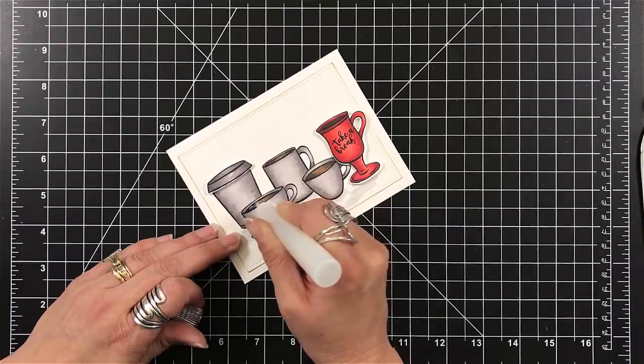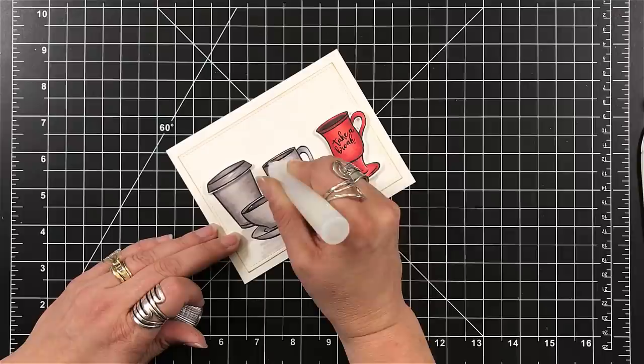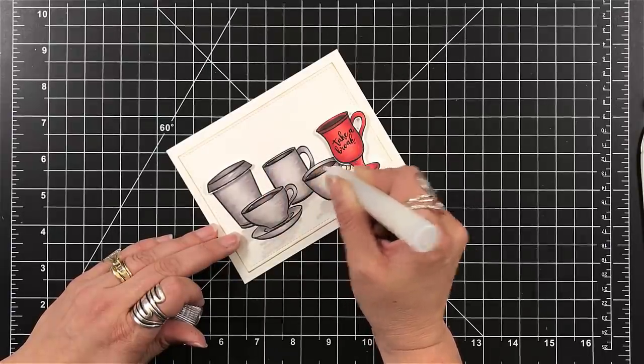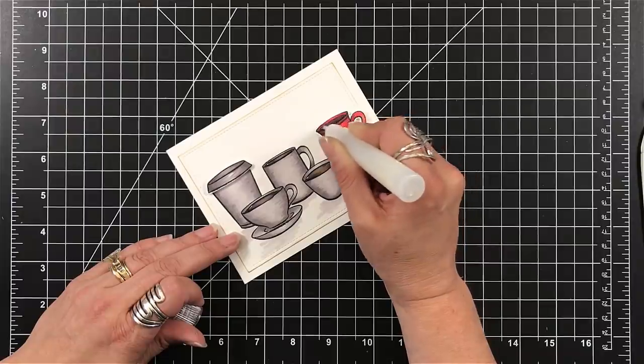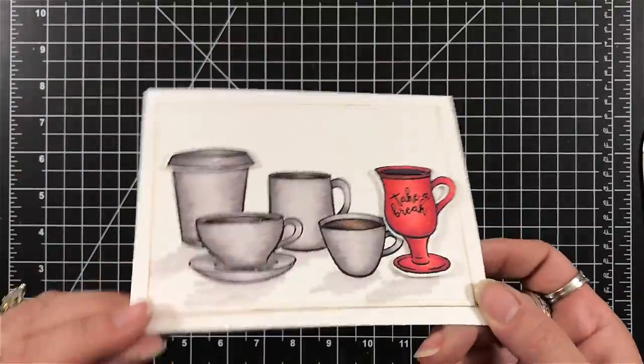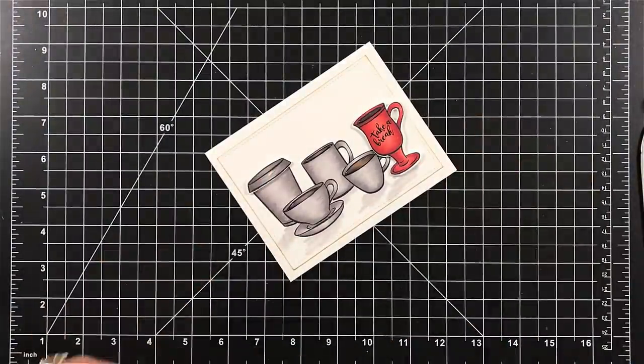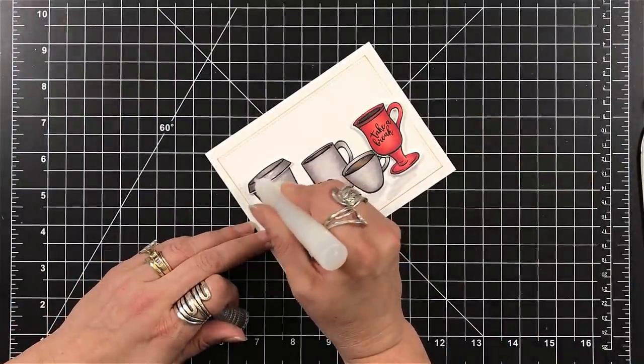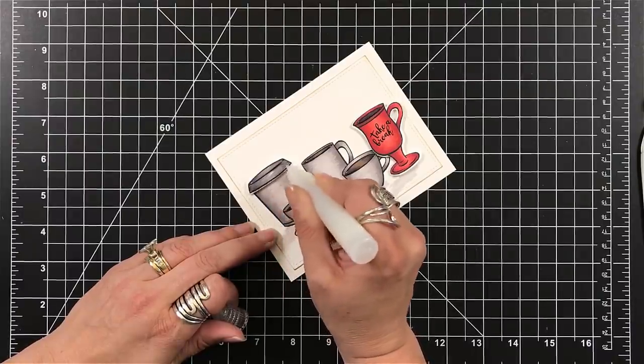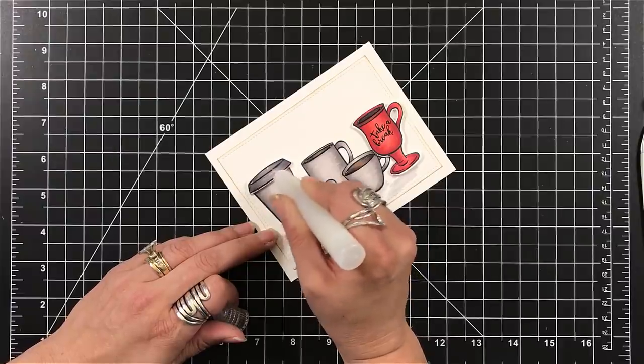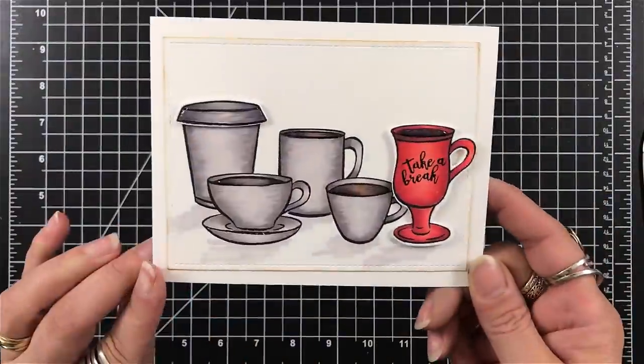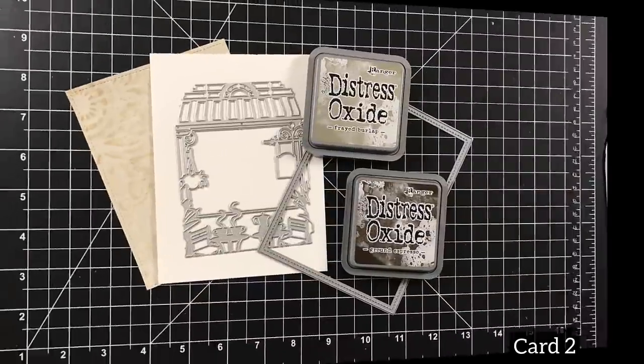I grabbed the lacquer that came in the kit and I'm just going over where the coffee is in each of the mugs. And then I'm also going to go over the takeout lid and just put some of the lacquer on that as well. That's when I realized I should do that. There's always afterthoughts, but we can add at any time. That's the beauty of our craft and paper. So that is pretty much card number one.